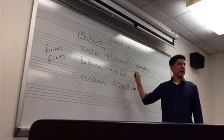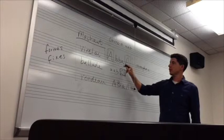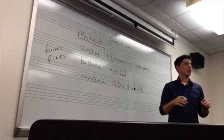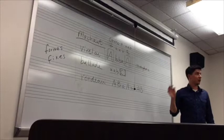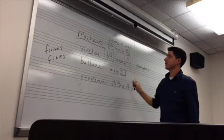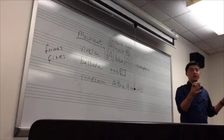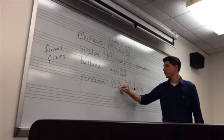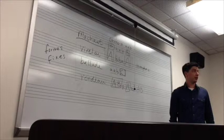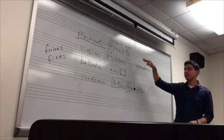And for the rondeau — if we bracket off all the refrains, what are we left with? A A B. So these formes fixes are simply different ways to deal with the canso by adding refrains. They're just different ways to add refrains to a basic concept.